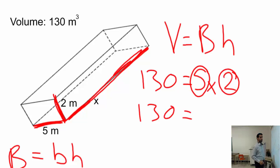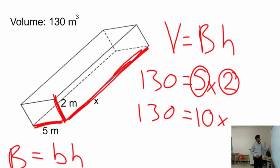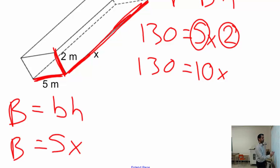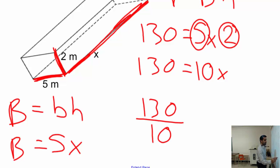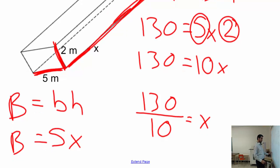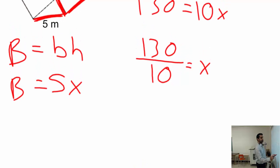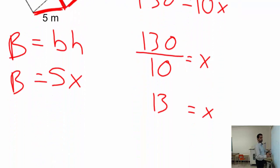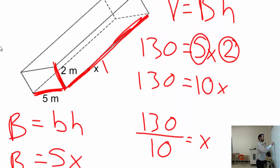So 130 equals 5x times 2, which is 10x. To leave x alone, divide both sides by 10: 130 divided by 10 equals x, so x equals 13 meters. Now you have all the dimensions and can calculate the surface area of the figure.